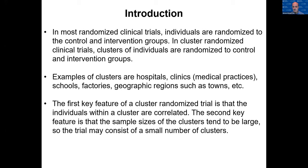Examples of clusters are hospitals, clinics, schools, factories, geographic regions, etc. The first key feature of a cluster randomized trial is that the individuals within a cluster are correlated. Unlike individually randomized trials where we assume individuals are independent, in a cluster randomized trial there tends to be a small level of correlation within each cluster, and we need to account for that. The second key feature is that the sample sizes of the clusters tend to be large, so the trial may consist of only a small number of clusters, which is not ideal.